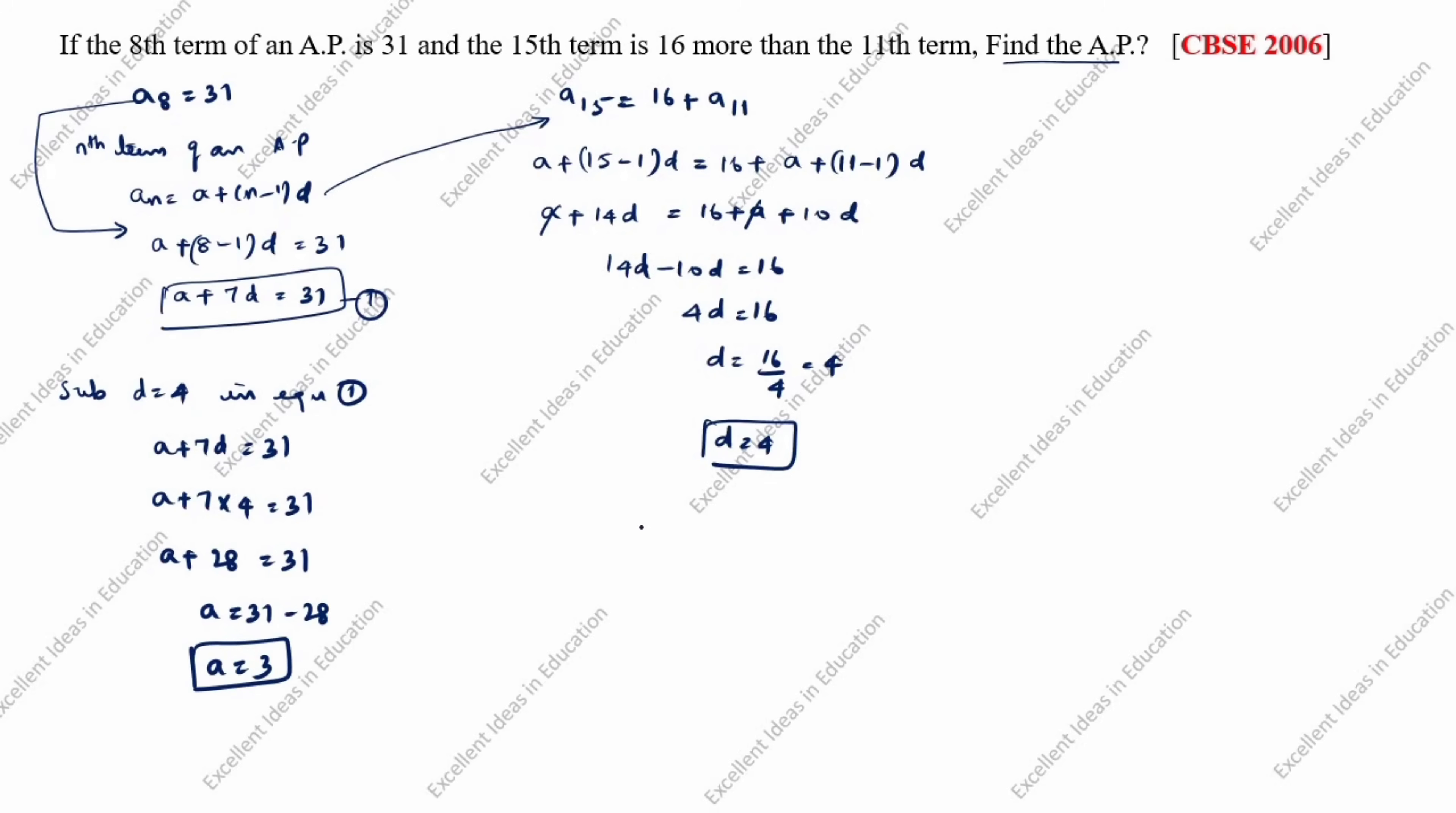Next, find the AP. A1 equals A, which is 3. A2 equals A1 plus D. A1 is 3, D is 4, equals 7. A3 equals A2 plus D. A2 is 7 plus D is 4, equals 11. A4 equals A3 plus D, which is 11 plus 4, equals 15.